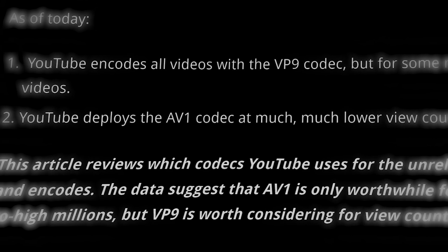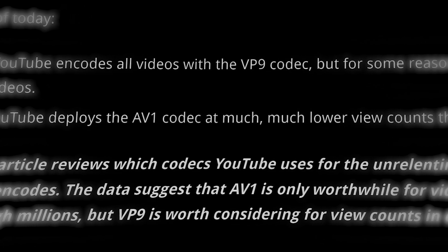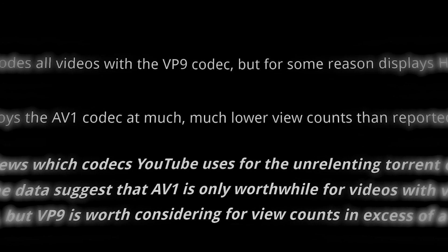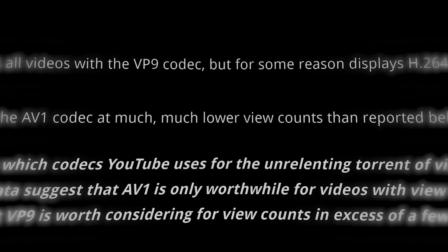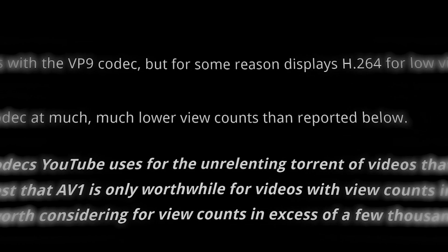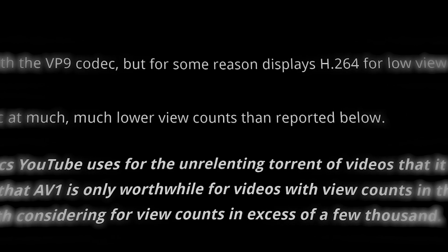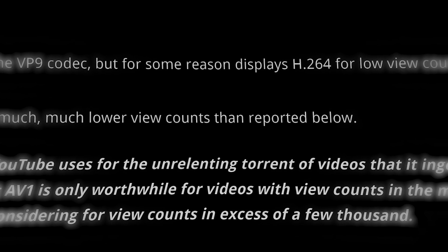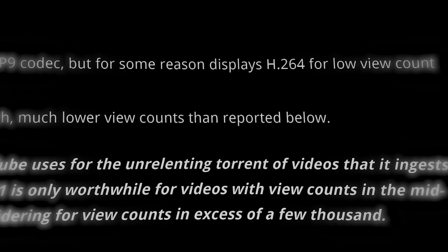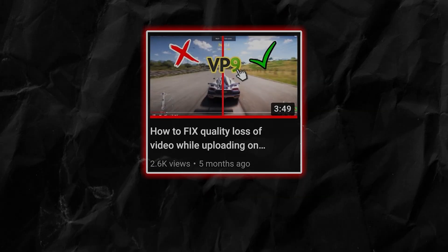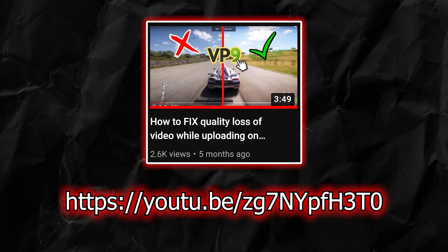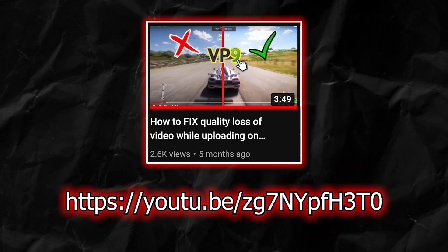However, there is one slight change — I will have to use a 1440p video for the VP9 codec, because there is currently no way to enable VP9 on a 1080p video if you are uploading from a non-monetized channel. The trick is to post a 1440p video, which forces YouTube to enable VP9. If your channel is monetized, YouTube will automatically enable VP9 on all your videos. If you want to know more, I have already uploaded a video on this — go check it out using the link in the description.